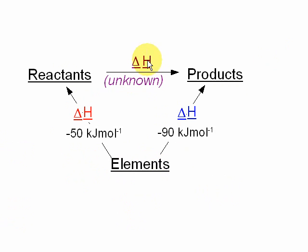But nonetheless the arrows are the same, and to work out delta H unknown, we would go down that arrow to change that sign to plus 50, and up that arrow to keep that as minus 90.